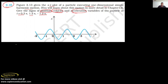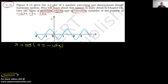Let us do them one by one. Since this is SHM — simple harmonic motion — you should remember that acceleration is equal to minus omega squared into x, where x is your displacement.